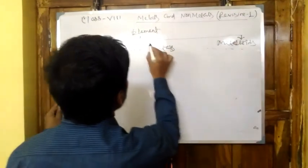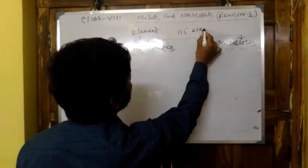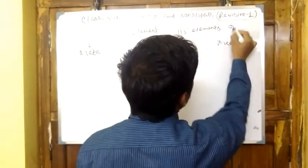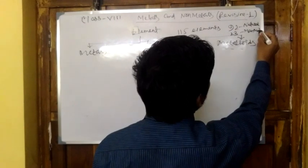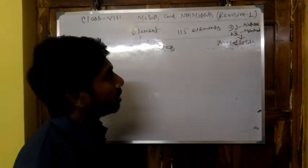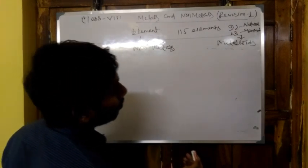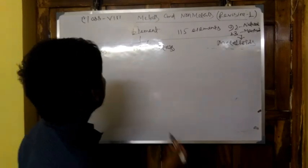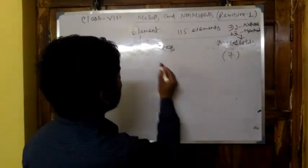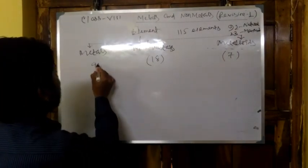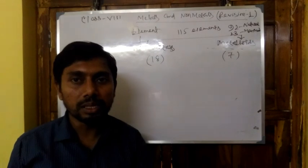We have studied the definitions of metal, non-metals, and metalloids. Out of 115 elements, 92 are natural and 23 are manmade. Out of these, there are only 7 metalloids, 80 non-metals, and 90 metals. These are the classifications of elements in the periodic table.